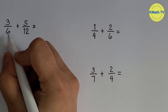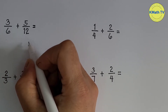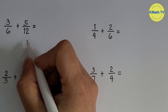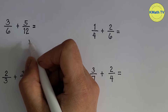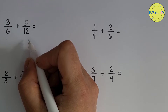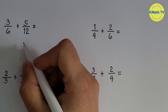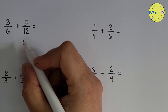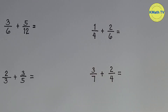3 sixths plus 5 twelfths. The denominators are different — 6 and 12. In adding dissimilar fractions, the first step is to get the least common denominator or LCD. The LCD is the least common multiple or LCM of the denominators, and we can find it using different ways: listing method, prime factorization, or continuous division. In our first example, let's use prime factorization to find the LCD.